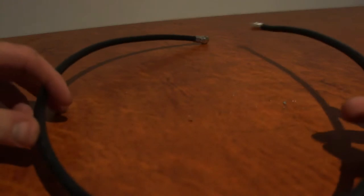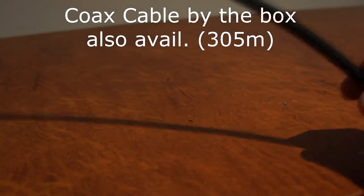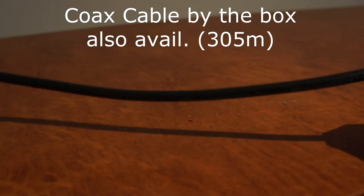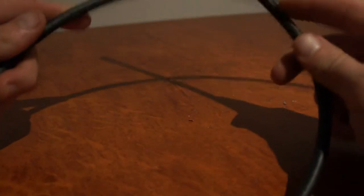You can buy a whole box of 305 meters, but that's usually too much cable for most people. So all you need to do is put in the quantity with the number of meters you need, and you will get that set length delivered to your door.